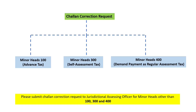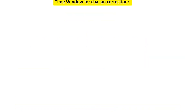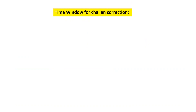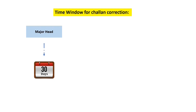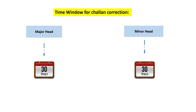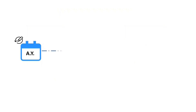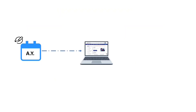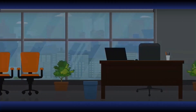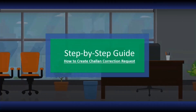For minor heads other than 100, 300, and 400, please submit the chalan correction request to the jurisdictional assessing officer. Regarding the time window: to change the major head (tax applicable), you can do so within 30 days of the chalan deposit date. To change the minor head (type of payment), the allowed time is also 30 days of the chalan deposit date. To change the assessment year, you can correct it within 7 days of the chalan deposit date.